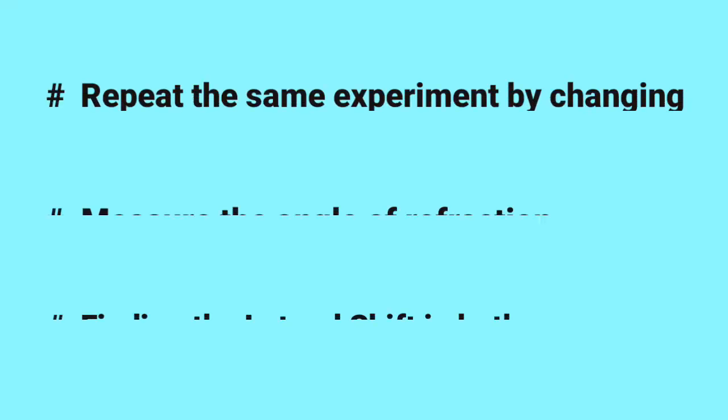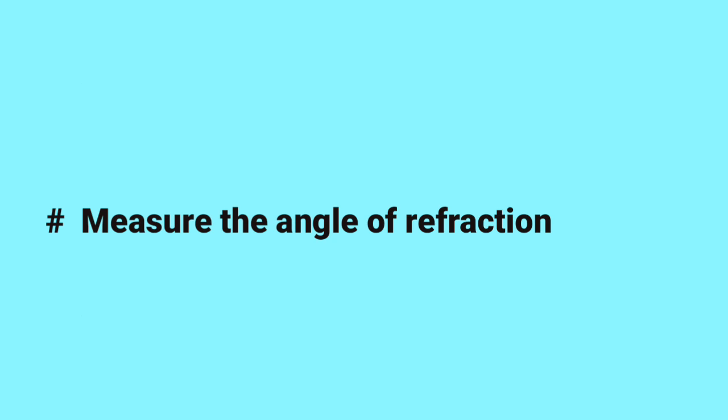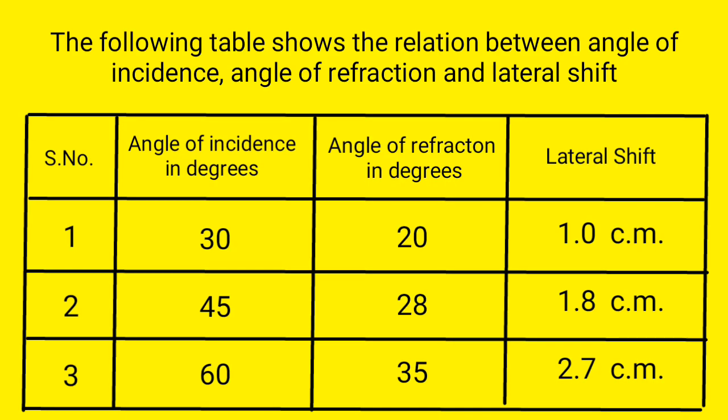Repeat the same experiment by changing the angle of incidence with 45 degrees and 60 degrees. Measure the angle of refraction and find the lateral shift in both cases. The following table shows the relation between angle of incidence, angle of refraction and lateral shift.